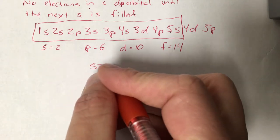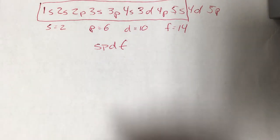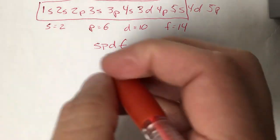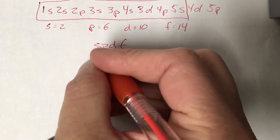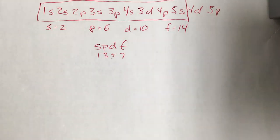They're s, p, d, and f in that order. And remember, that's the order you have to learn them in. Once you have them in order, to get the suborbitals, it's just odd numbers starting with 1: 1, 3, 5, 7. That's the number of suborbitals you have in each one of those.